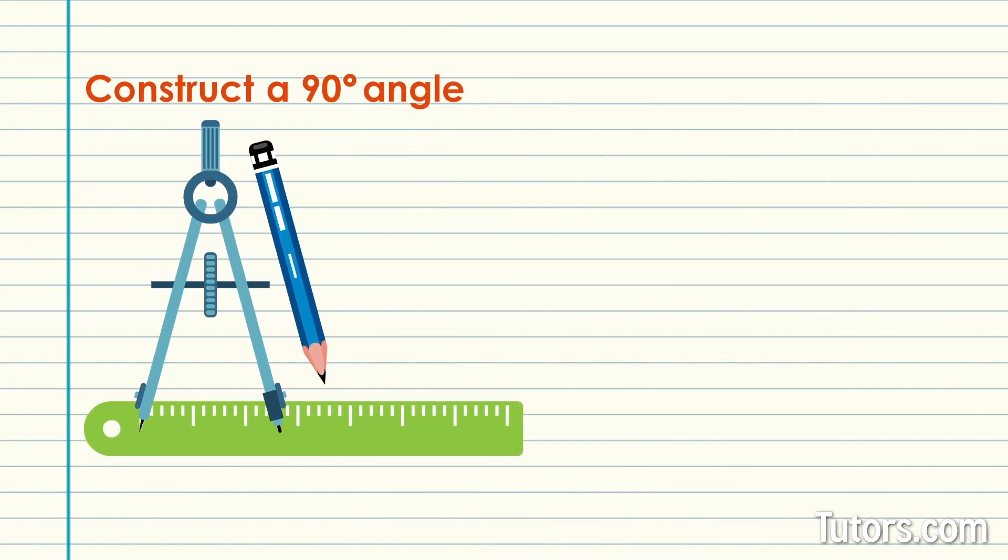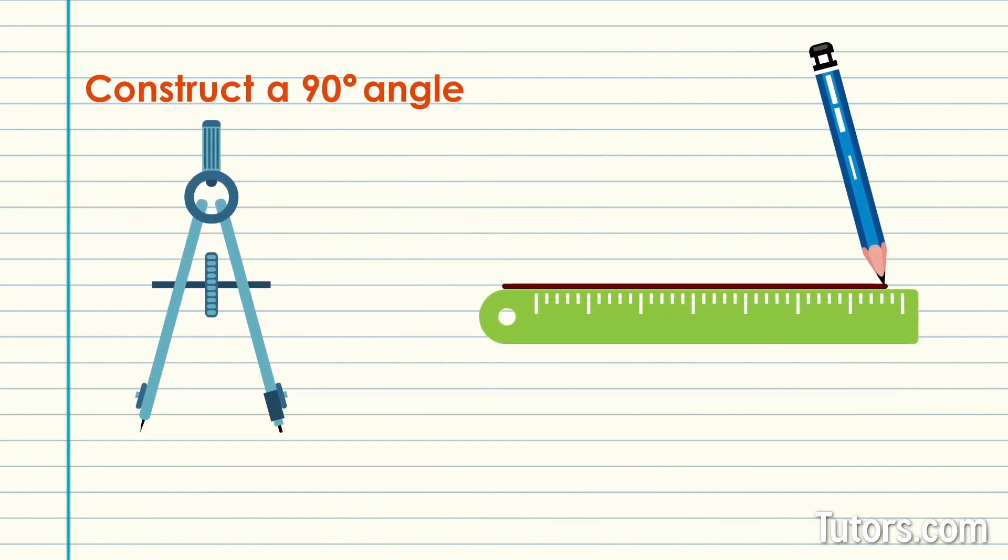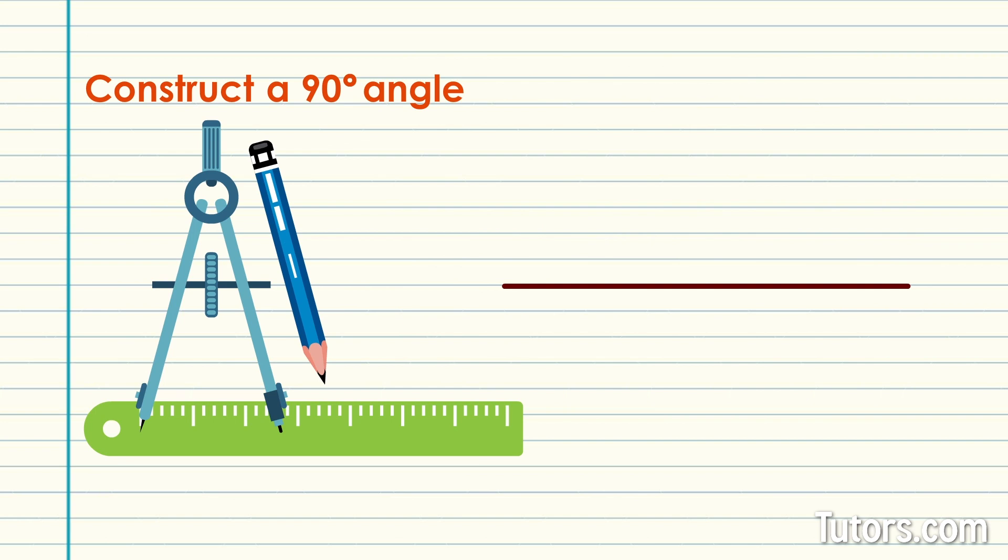On your paper, draw a line segment longer than the ray of the 90-degree angle you need. Locate two points on the line segment at either end.